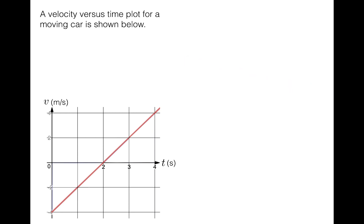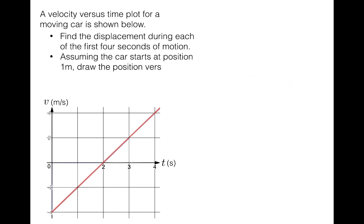So there are two things to do here. First, given this plot, can you determine the displacement of the car in each of the first four seconds? And second, assuming the initial position is one meter, can you draw the position versus time plot for the first four seconds of motion? The first part of this question asks us to find displacement during each of the first four seconds, which means we'll need to calculate some areas.